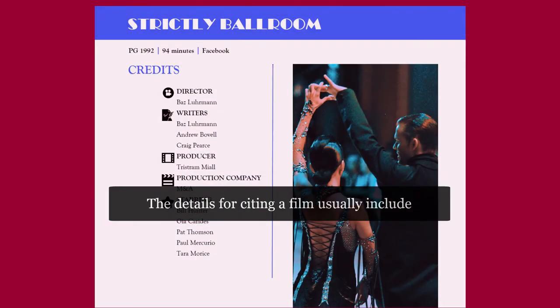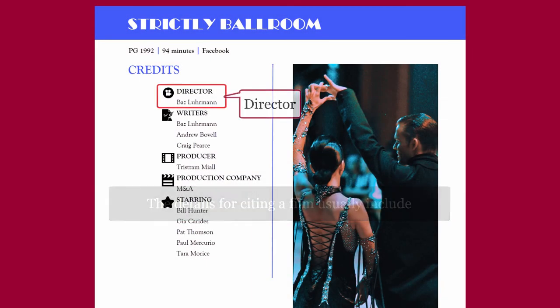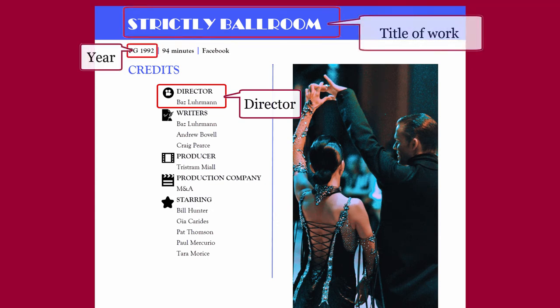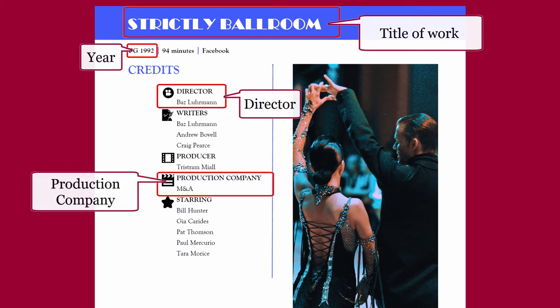The details for citing a film usually include the director, year of release, title of work, and the production company.